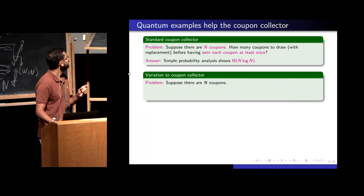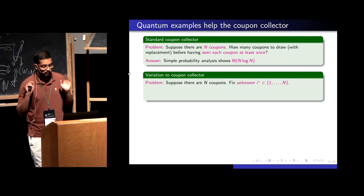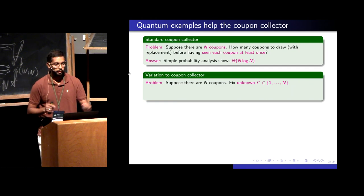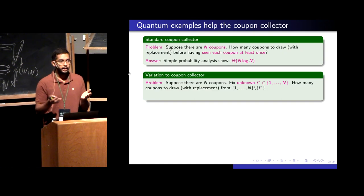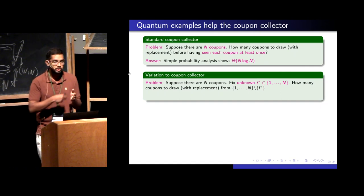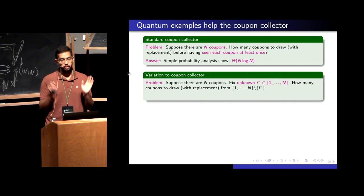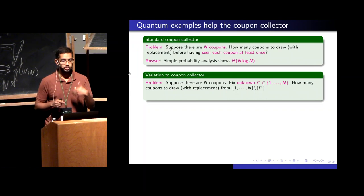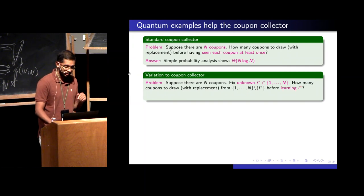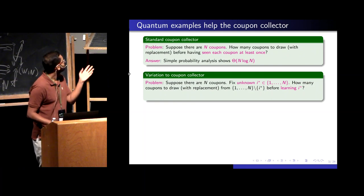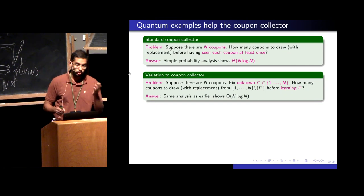Let me change the problem a little bit. There are still n coupons, but one fixed coupon I-star is removed and placed on the table. In my hand I have only n minus one coupons. The question is: how many coupons do I need to keep picking from these n minus one coupons before you realize what is the missing coupon I-star? The same analysis from coupon collector shows that n log n is the right answer — you need n log n many samples from the n minus one coupons.